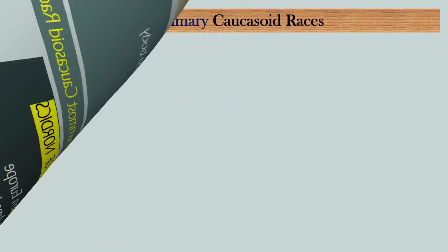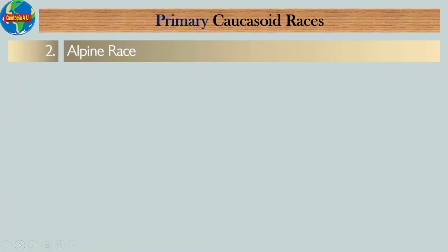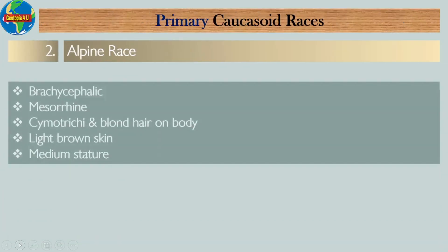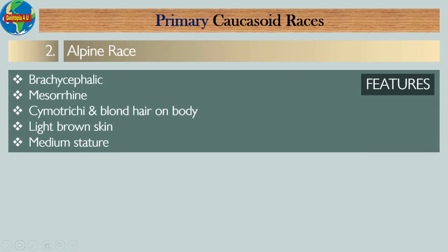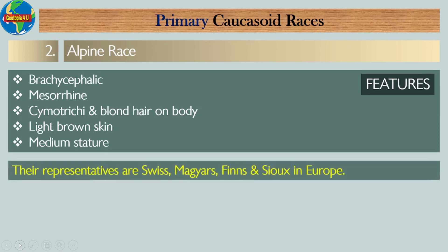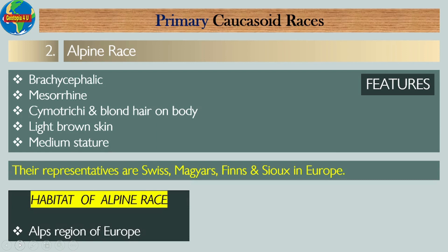Number two: Alpine race. The features of the Alpine race include: they are brachycephalic; they are mesorhine; they have cymotrichous and blonde hair; they have a light brown skin; and they are of medium stature. Their representatives include the Swiss, Magyars, Finns, and Slavs in Europe. The habitat of the Alpine race includes the Alps region of Europe.